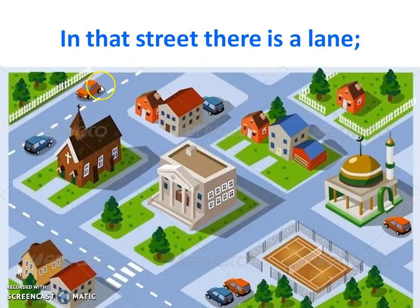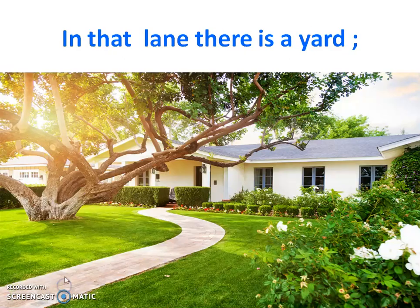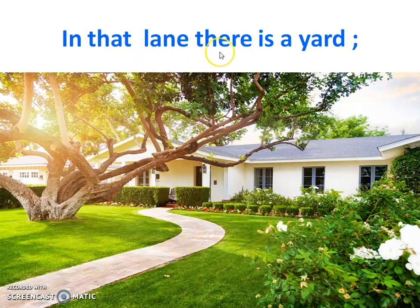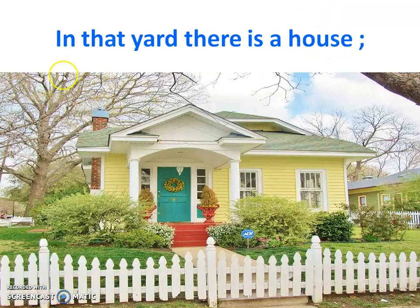Lane means a smaller or narrow road which is attached to a main road. Street is the main road. So street is bigger than lane. In that lane, there is a yard. In that lane there are so many yards, so lane is a bigger concept than yard. In that yard, there is a house. Yard is bigger than the house.